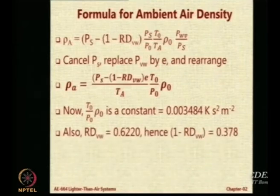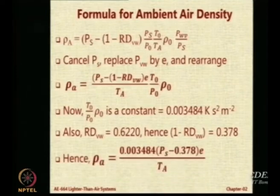Secondly, this RD_VW, this is the relative density of water vapor with air, and this number can be measured by experiments as 0.6220. Density of water vapor as compared to the air, relative density, is 62.2%. So 1 minus RD is 0.378.